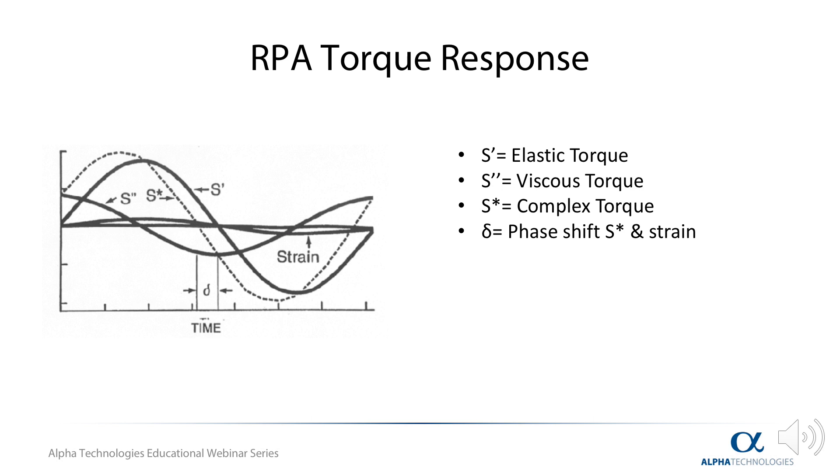The RPA functions by applying a given strain at a given frequency to an enclosed sample and then measuring the torque response of the material. The dashed curve above displays the torque response. This is the property the instrument directly measures and records.